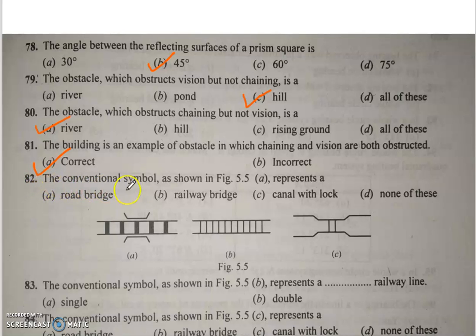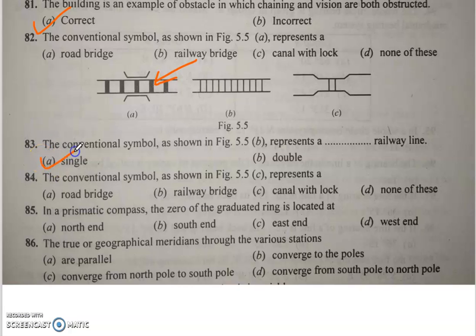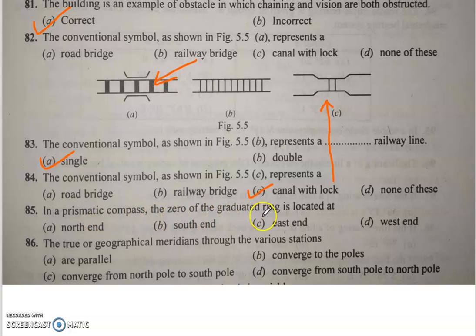Q82/83: The conventional symbol as shown in figure 5.5b represents a single railway line. Q84: The conventional symbol as shown in figure 5.5c represents a canal with lock. Q85: In a prismatic compass, the zero of the graduated ring is located at the south end.